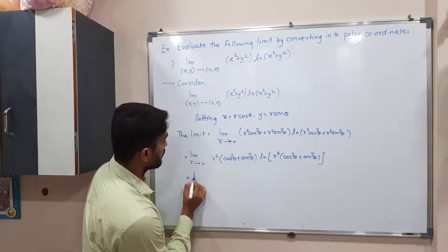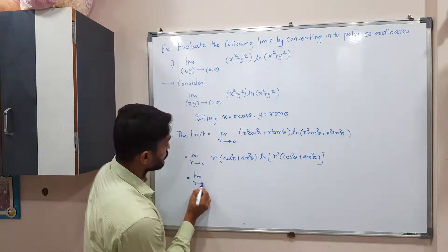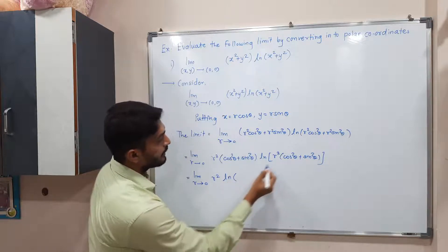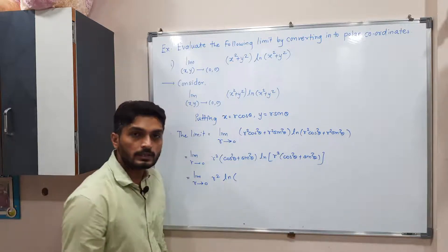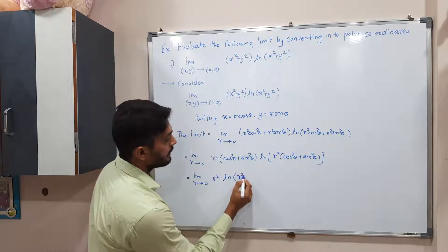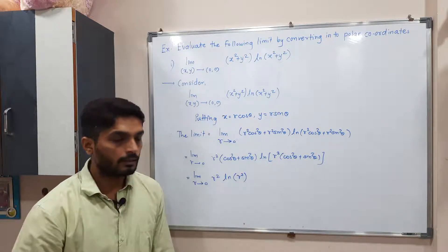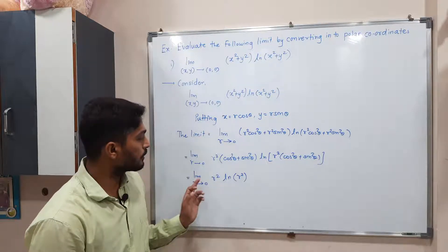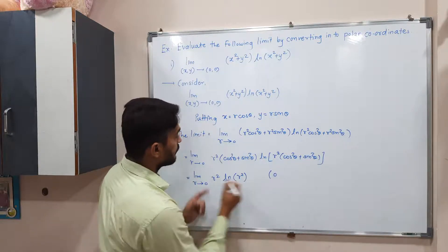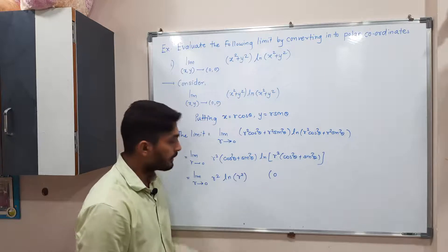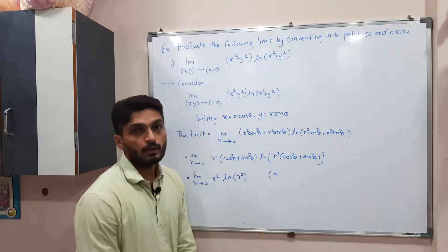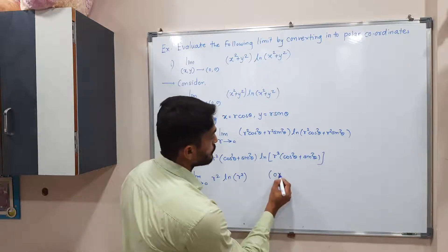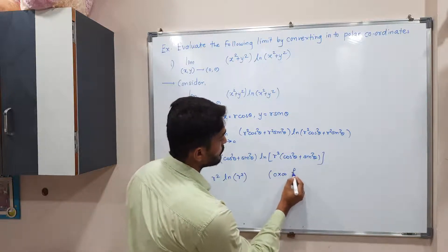So the limit becomes: limit as r tends to zero of r² · log(r²), which simplifies to r² · log(r²). If we put r = 0, we get 0 from r², but log(0) is minus infinity, so we are getting the indeterminate form 0 times infinity.